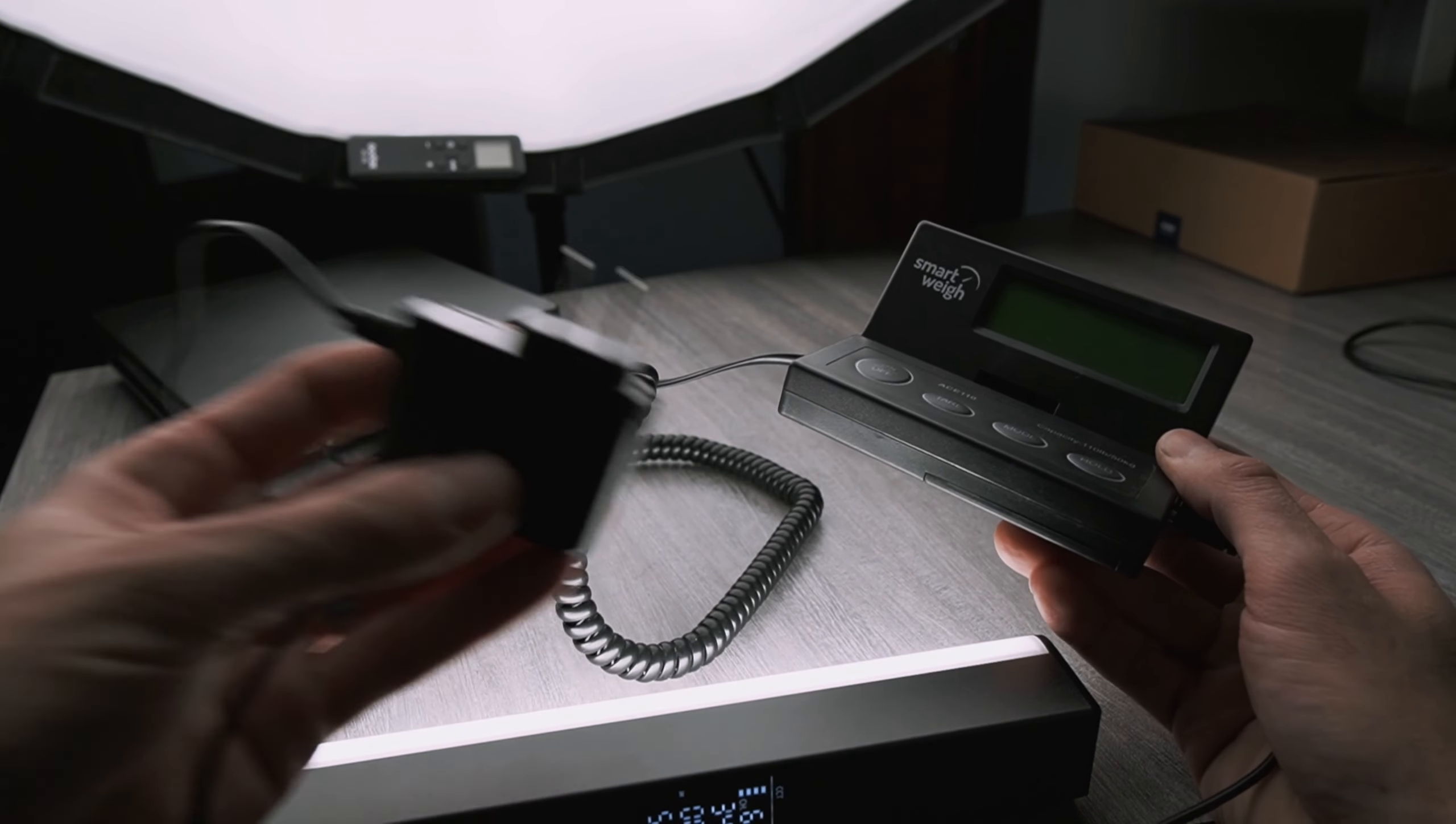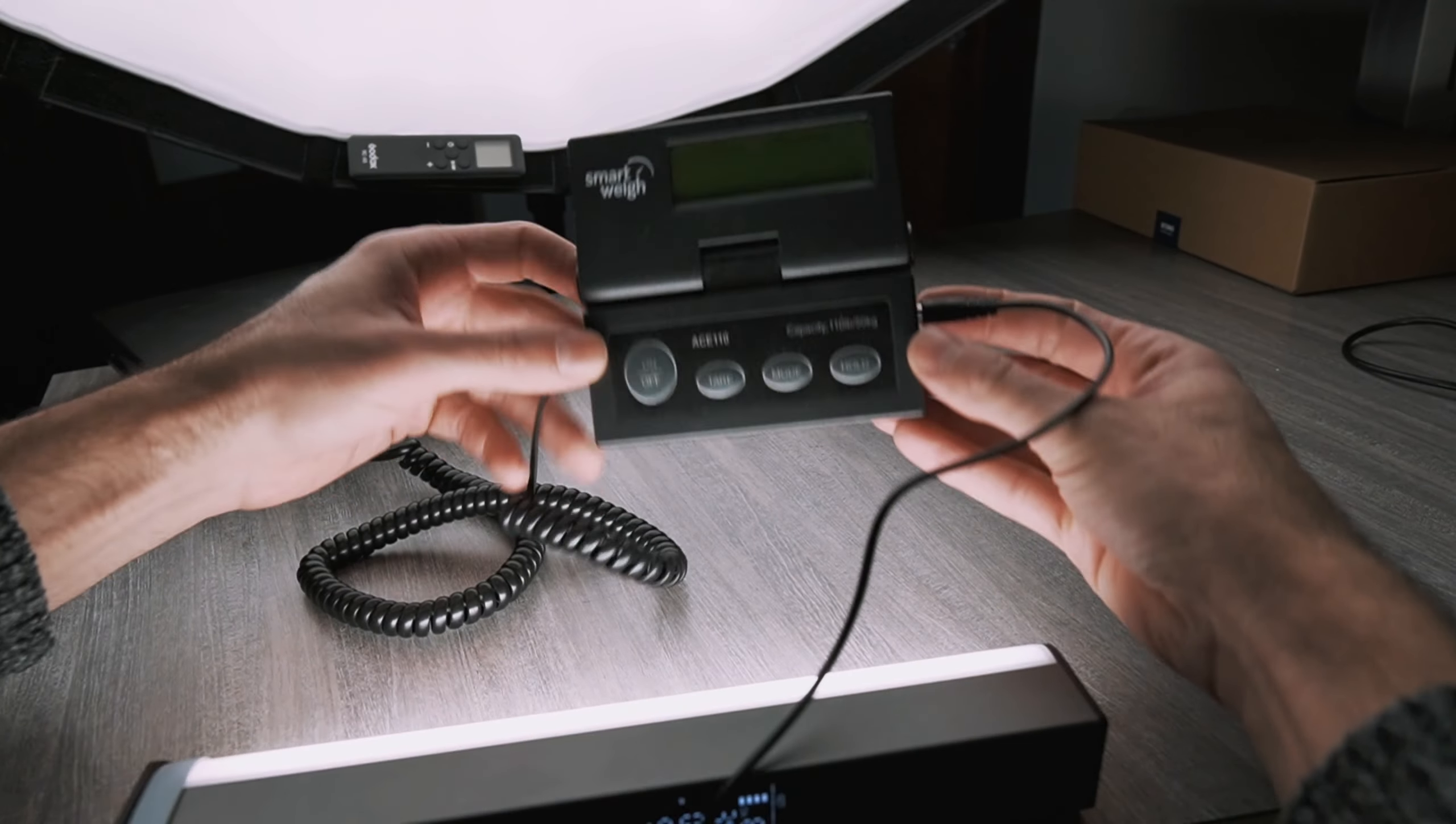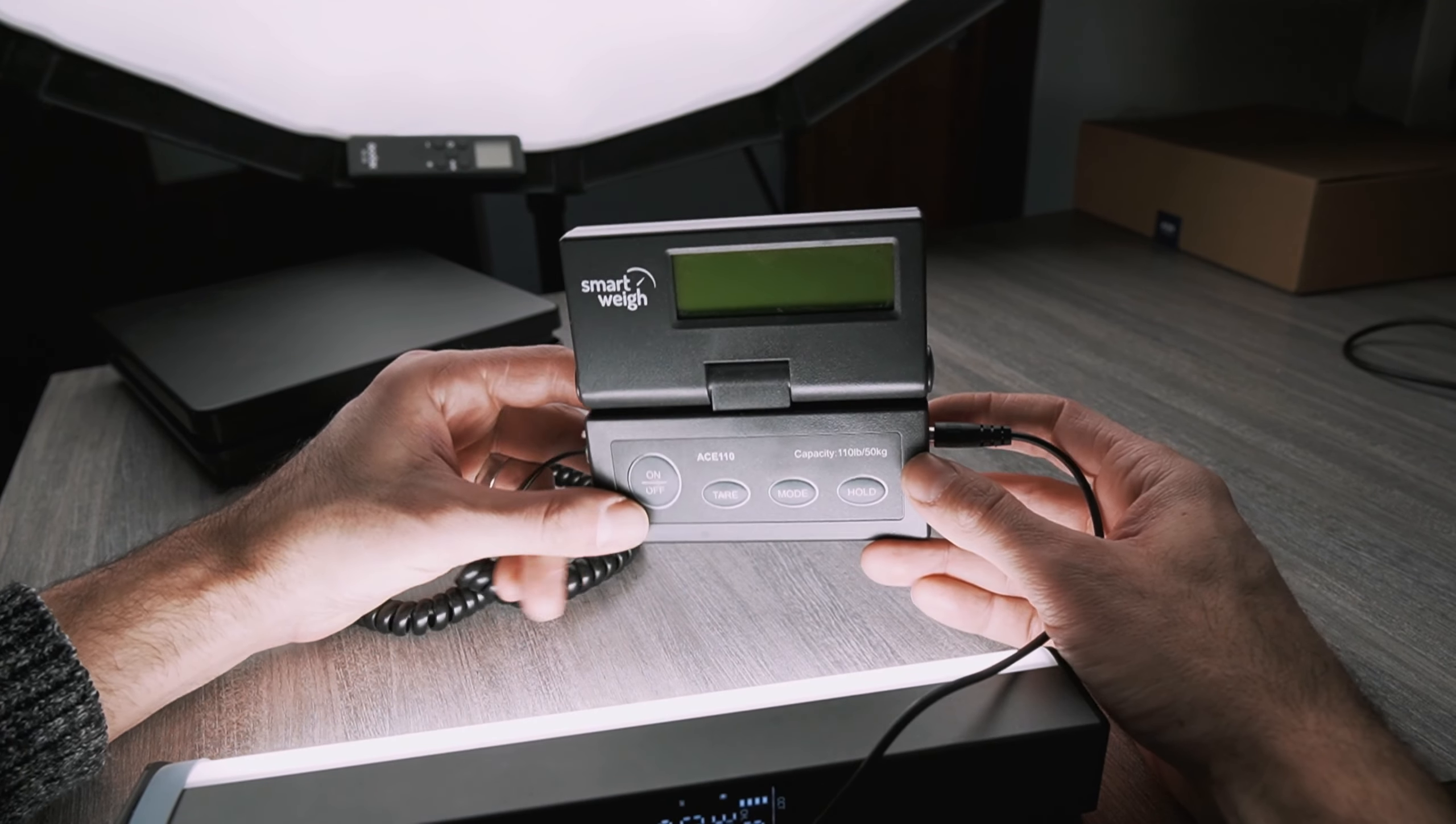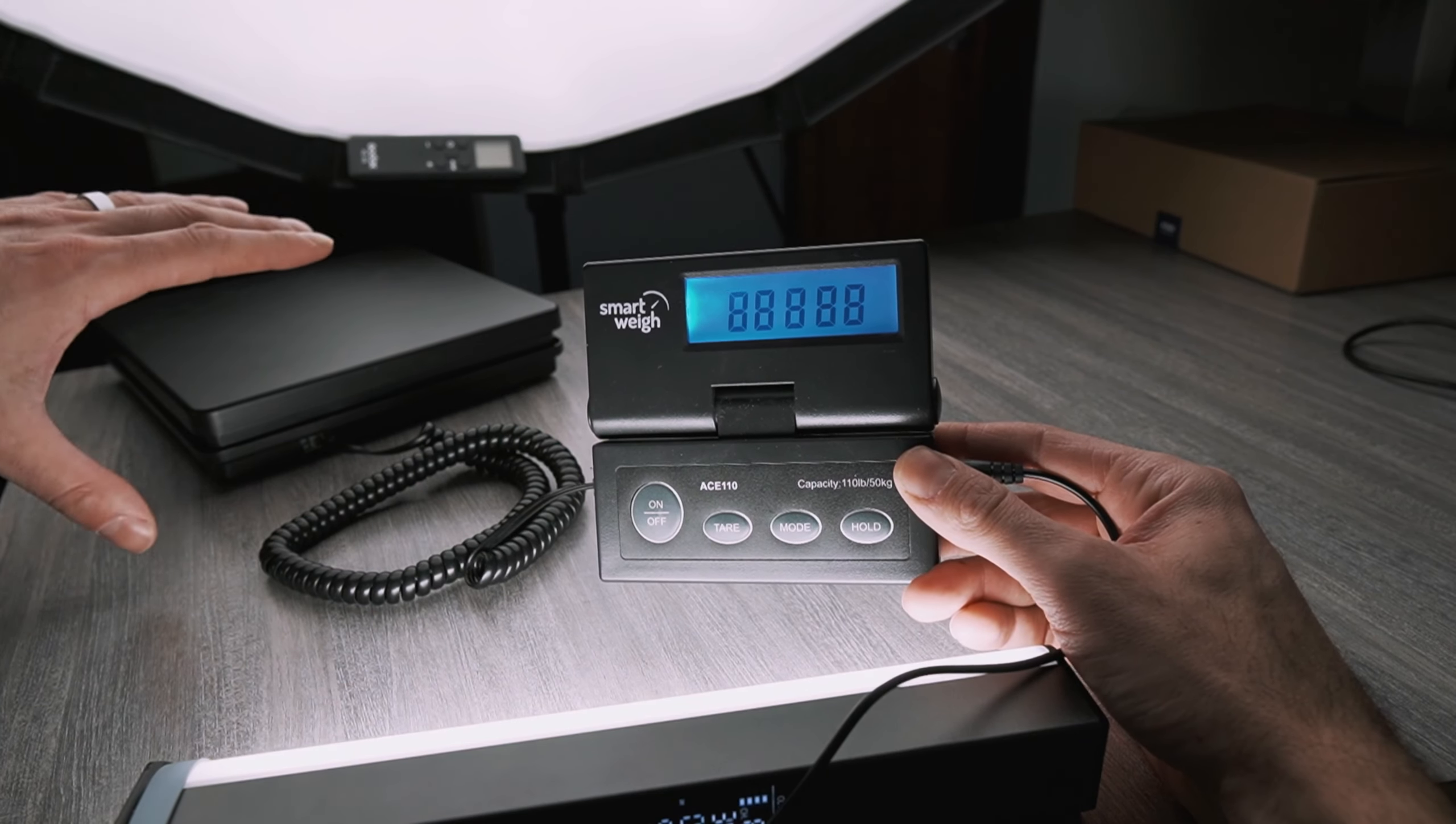It has keyhole slots so you can mount this to a wall. A lot of people mount this right on the wall behind the plate so it's always accessible and in view. When you turn it on, it's going to automatically tare the scale, so it'll zero everything out.